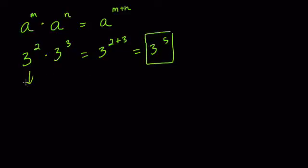It goes back to the idea that 3 squared is 3 times 3, and 3 to the 3rd is 3 times 3 times 3. So imagine when you multiply these, you get a group of two 3s and a group of three 3s.